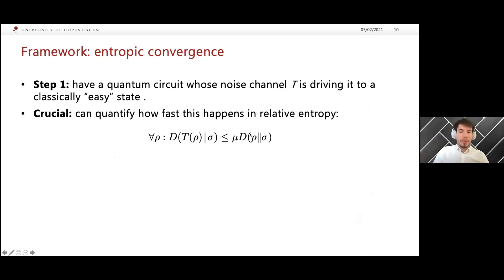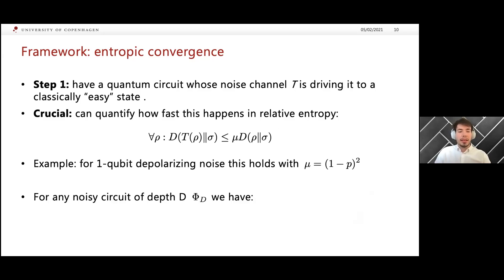As I mentioned before, the crucial first step will be to quantify how much the noise is driving you to a classically easy state in relative entropy by an inequality like this one. We call this strong data processing inequalities. To prove such things, the relevant tool are so-called modified logarithmic Sobolev inequalities. I refer you to the talk by on Tuesday for state of the art on these inequalities. For example, for our simple case of one qubit depolarizing noise, we have that such an inequality holds with mu equals one minus p squared. This is by how much the relative entropy is contracting. In particular, for any circuit of depth D, you then have that the relative entropy is bounded by this much. So it decays exponentially in depth.